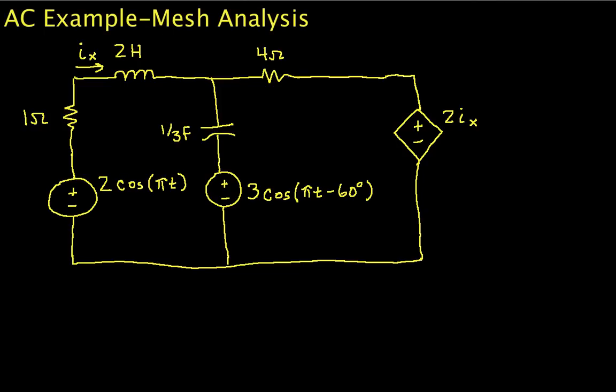Welcome to this video. In this video we are going to do an example of mesh analysis using AC steady-state concepts. So our independent sources are going to be cosines and we will try to find out what the current I sub X flowing through the 2-Henry inductor is. So that's our goal.